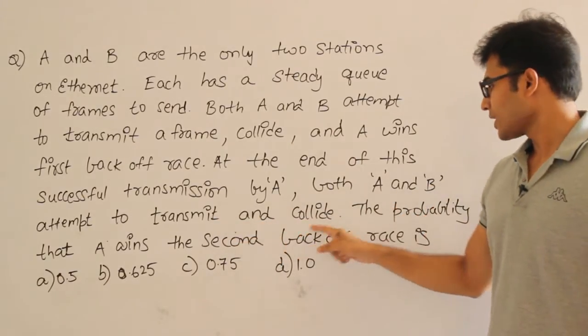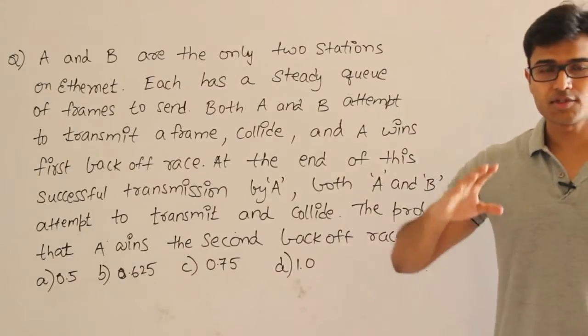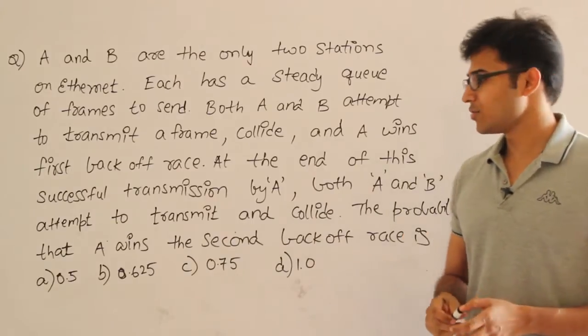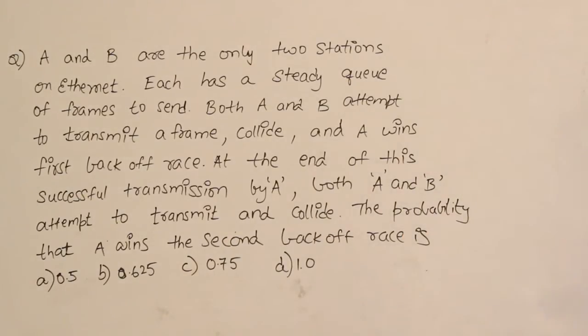The probability that A wins the second backoff race is, which means after the first collision, what is the probability that A will win the second collision? That is what they are asking.